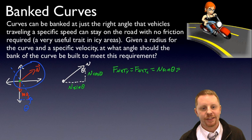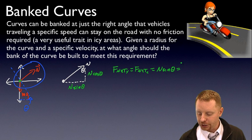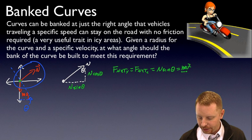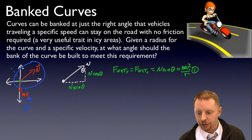In this case, our acceleration around a curve is v squared over r because it's a centripetal acceleration, so that's mv squared over r. There's our first equation.